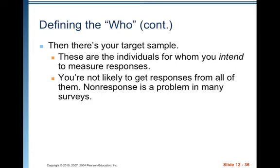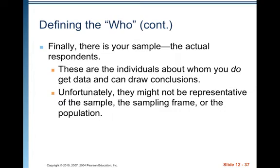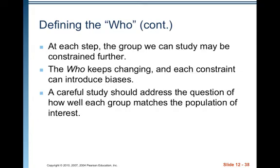Then there's your target sample — the individuals for whom you intend to measure responses. You're not likely to get responses from all of them. Non-response is a problem in many surveys; people just don't want to answer. Finally, there's your sample, the actual respondents — the individuals about whom you do get data and can draw conclusions. Unfortunately, they might not be representative of the sampling frame or the population. At each step the group we can study may be constrained further, and each constraint can introduce bias.